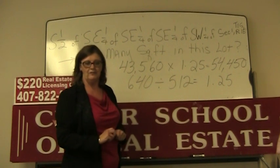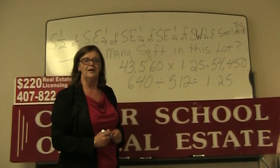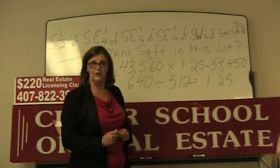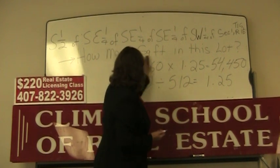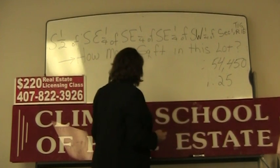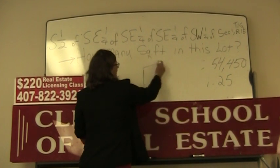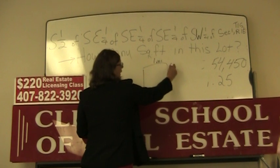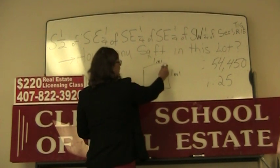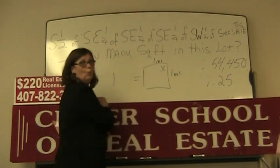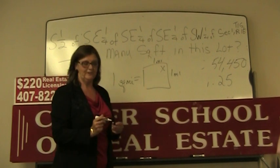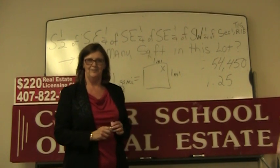Now one more thing before I leave. The most missed question on the state exam is how many square miles are there in a section? Well, we all know that a section is one mile by one mile. How many square miles are in that section? One times one equals one square mile. I hope this is helpful to you when you're on the state exam. Remember to come to Climbers and have a great time.